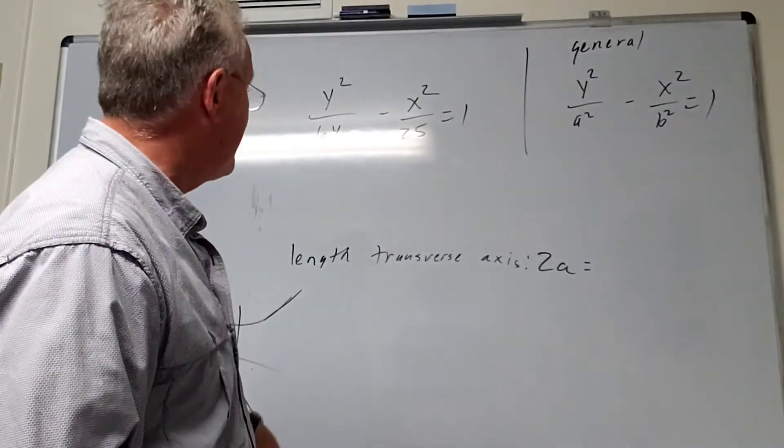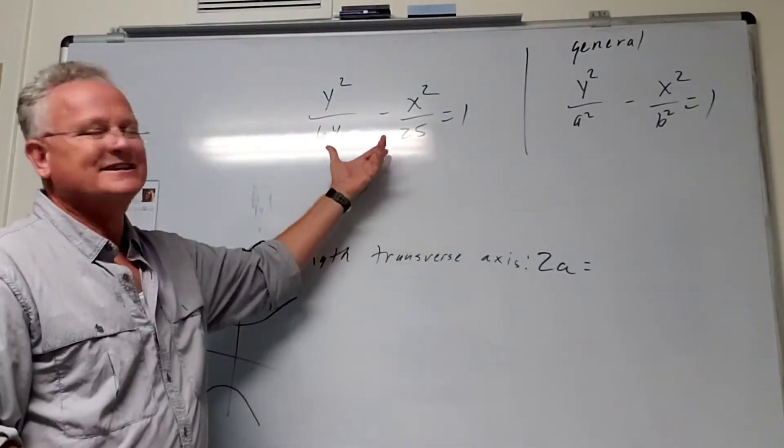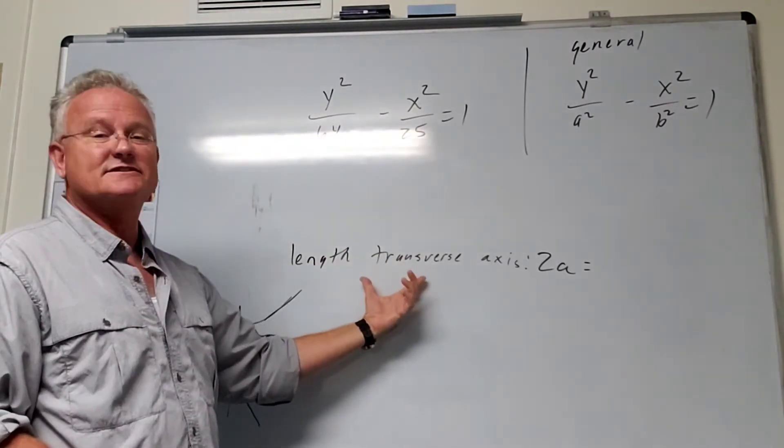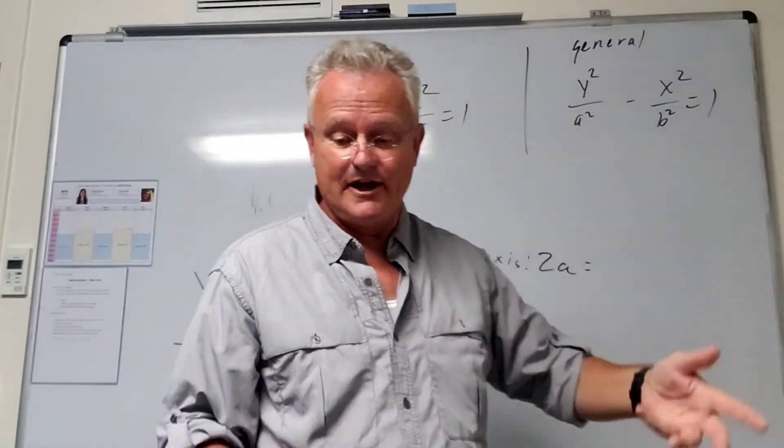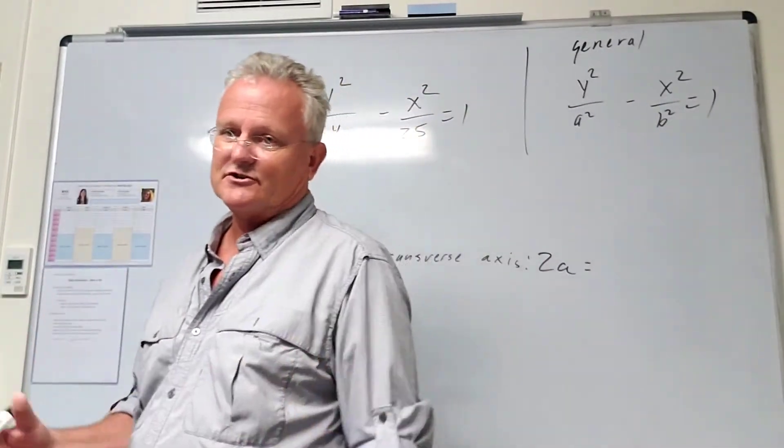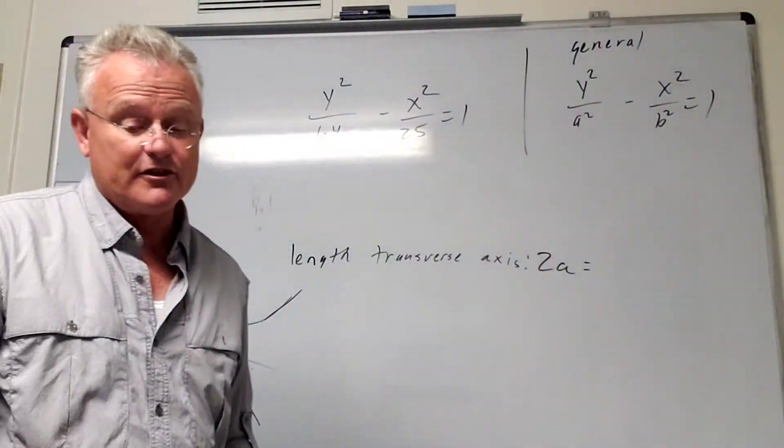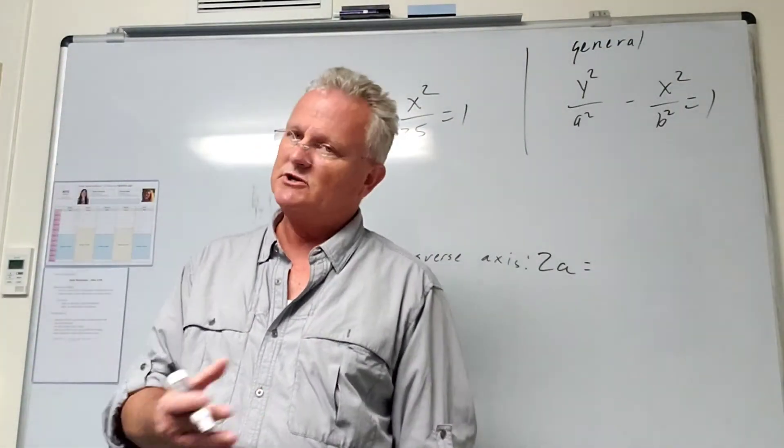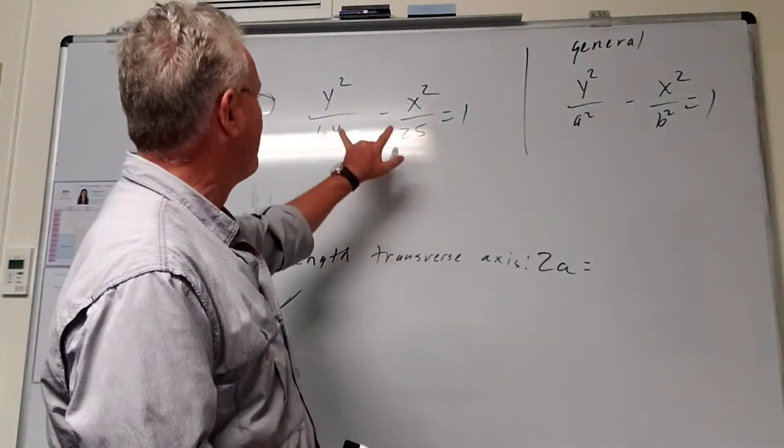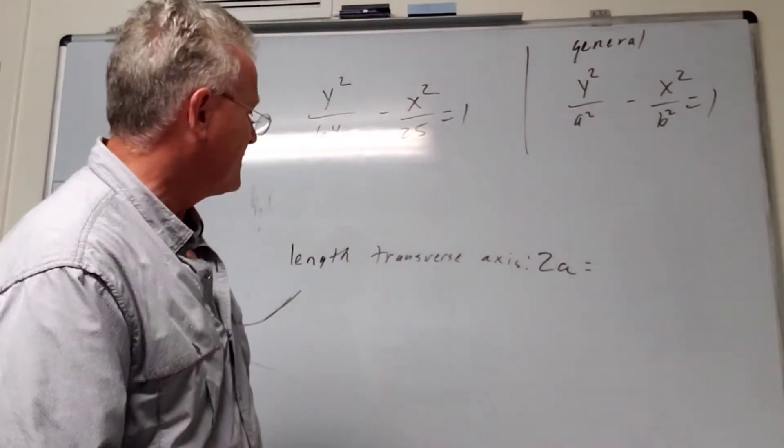So the formulas - well, actually it doesn't matter for the transverse axis, it's the same formula no matter if the x-squared comes first or the y-squared. But for the vertices, the foci, and the asymptotes, those are different formulas depending on what comes first.